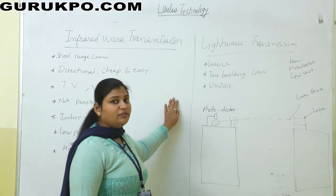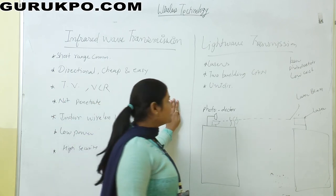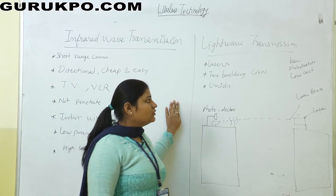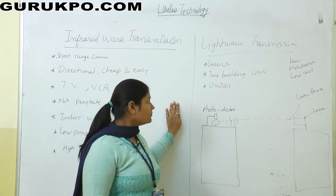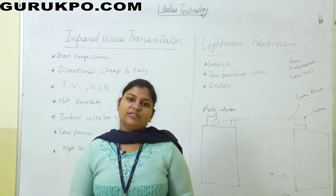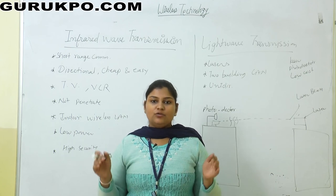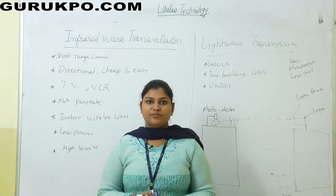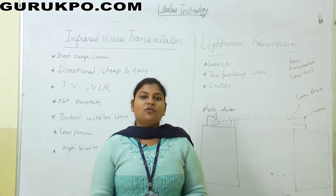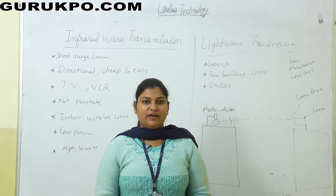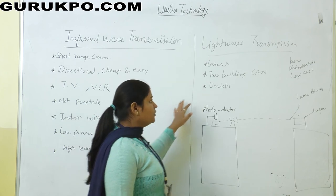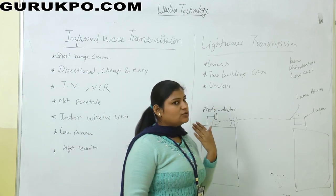Next is light wave transmission. Light wave transmission is very cheap and uses laser beams to send data. It is used as a LAN connection between two buildings. When we want wireless transmission that is cheap, light wave transmission is used. When there are two buildings and we want to connect them via LAN, light wave transmission can be used. It is unidirectional, meaning the signal is sent in one direction.